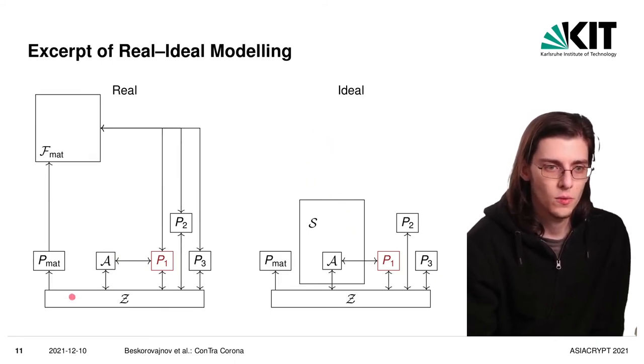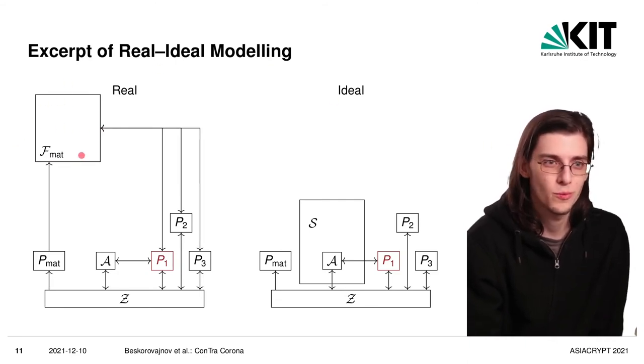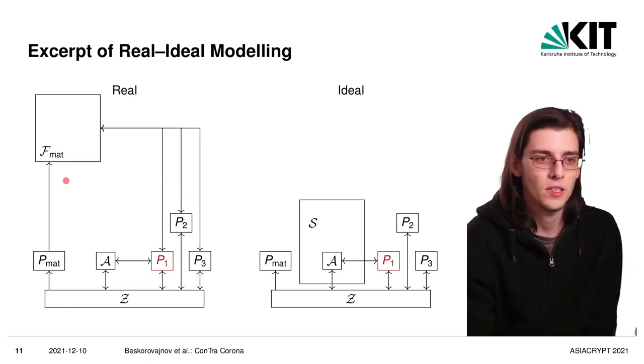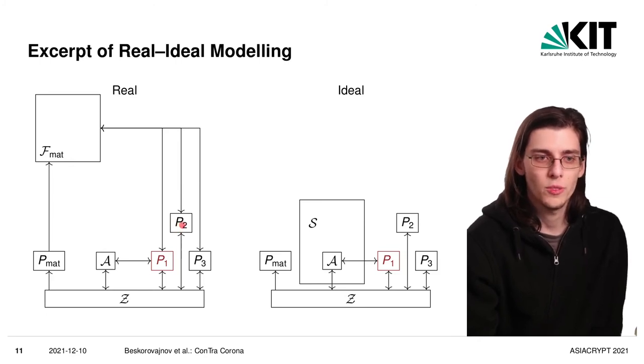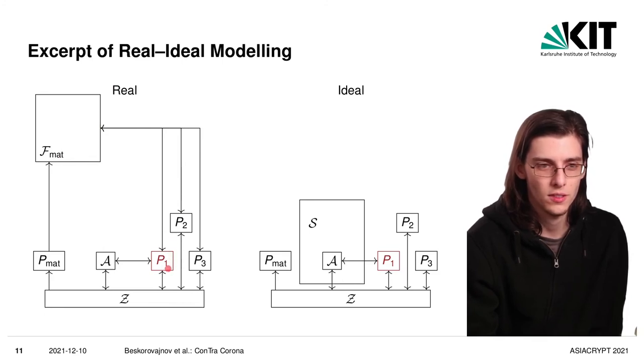Now, how does the contact graph play into all this? When the environment regularly specifies a new contact graph, it will send this to a special designated party PMAT, which will only forward it to an ideal functionality in the real model that represents how the physical world interacts. So we don't specify this as a program, we specify this as an ideal trusted program to model the way we expect the physical world to behave. And in this case, this means the environment can specify which parties are in proximity to each other by specifying such a contact graph. And when then party P2 will broadcast an identifier, FMAT will look up in the current contact graph which parties are in proximity and forward the broadcast to those parties.